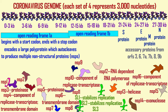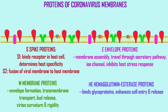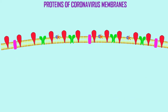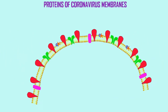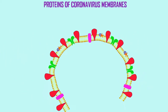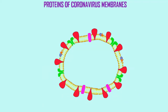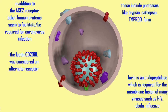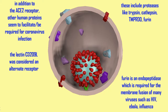These accessory proteins can vary from coronavirus to coronavirus. For example, the hemagglutinin esterase protein is produced by some coronaviruses and not others. Many of these proteins' functions are not known at all, or not fully known.